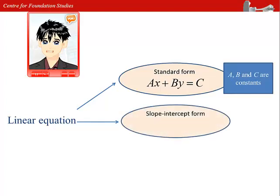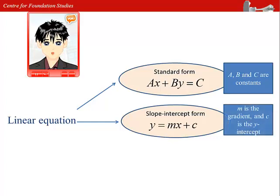The second form is the slope intercept form: y equals to mx plus c, where m is the gradient, and c is the y intercept.